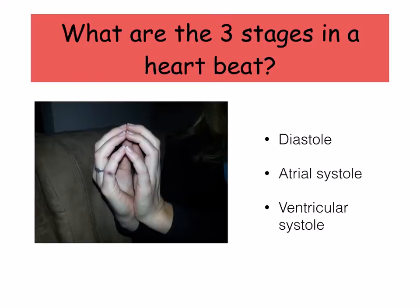The heart beats as the cardiac muscles in its walls contract and relax. When they contract, the heart becomes smaller, squeezing blood out — this is called systole. When they relax, the heart becomes larger, allowing blood to flow into the atria and ventricles — this is called diastole. An easy way to remember what is happening in each stage is to put your hands together. This represents when the muscles in the heart are relaxed, so we call this diastole.